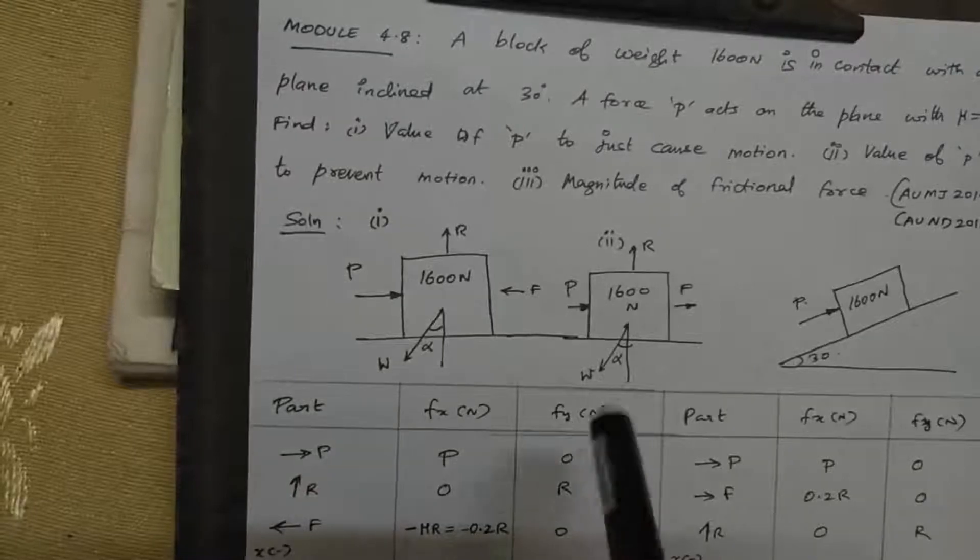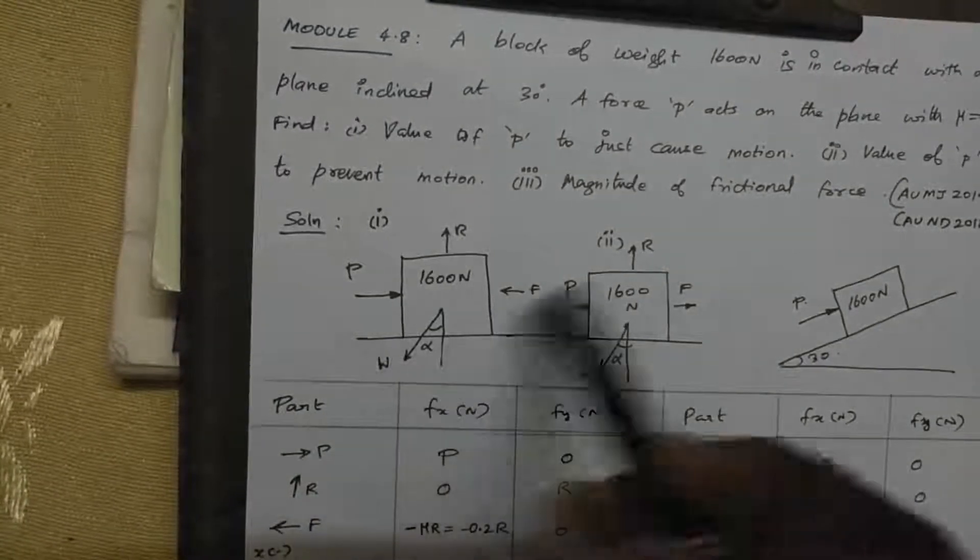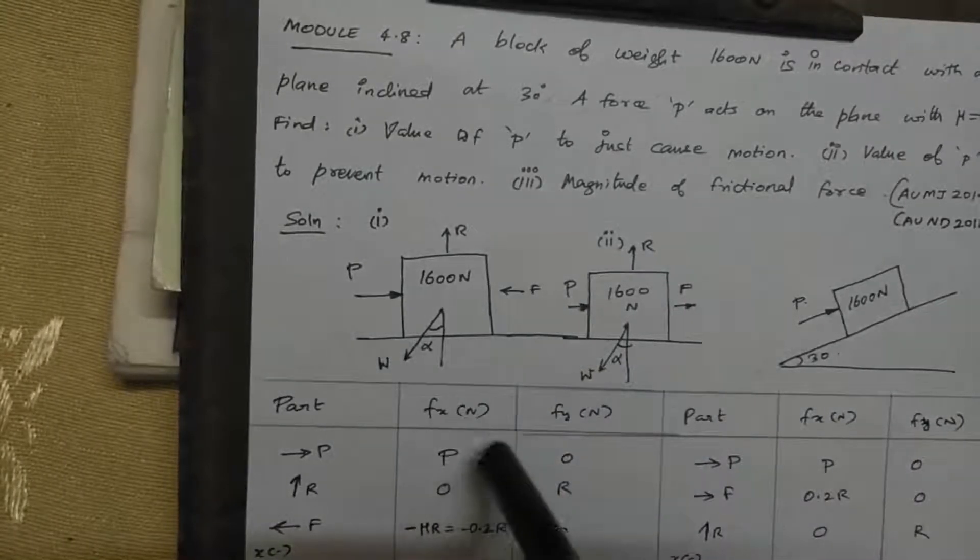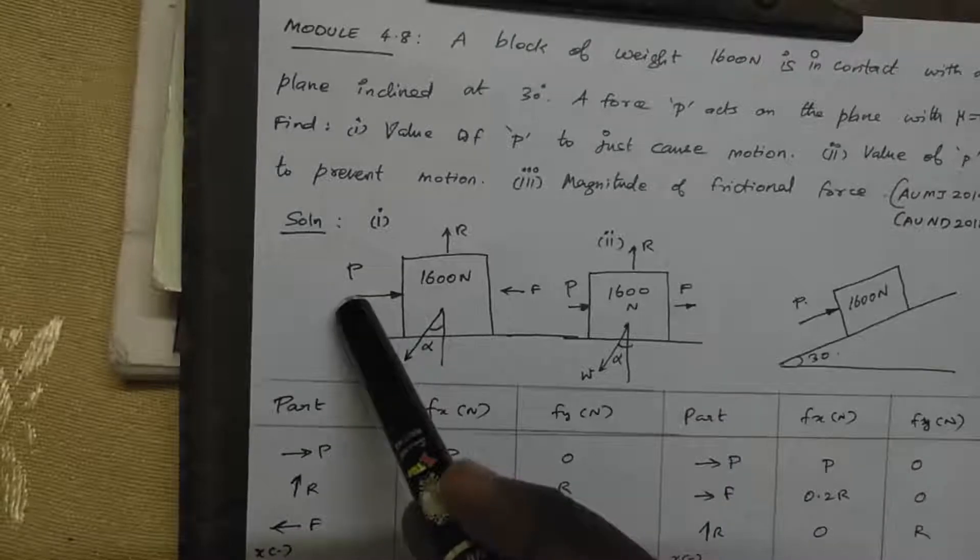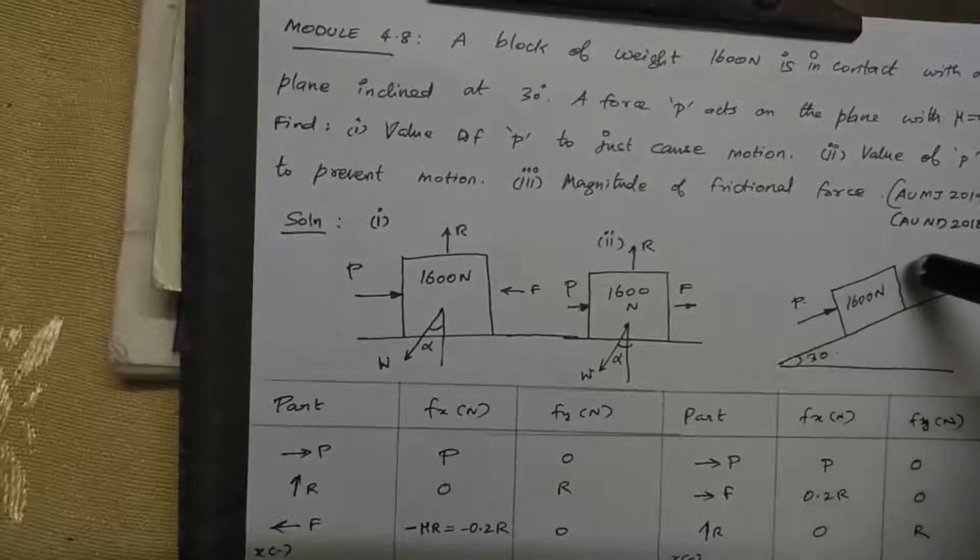For the first case, the block weight is 1600, the load is inclined. The capital W is also inclined. The block is moving upward.